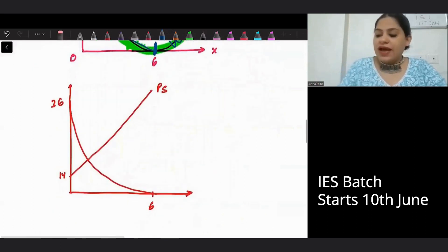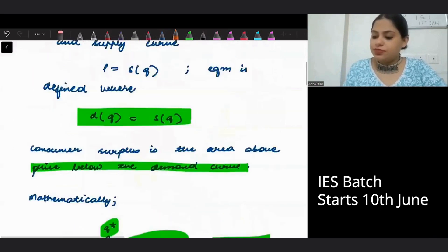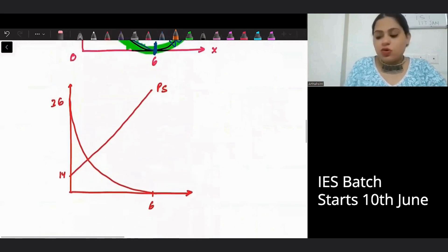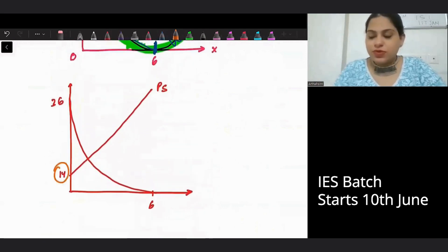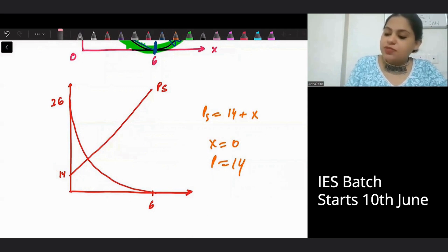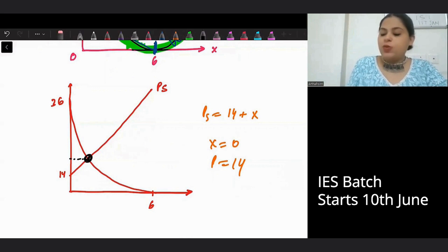Now, comes the supply curve. The supply curve is given to you as 14 plus x. So when x is 0, this is 14. Supply curve is 14 plus x. So when x is 0, price is 14.